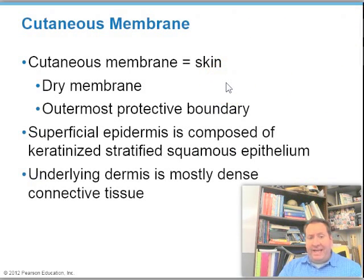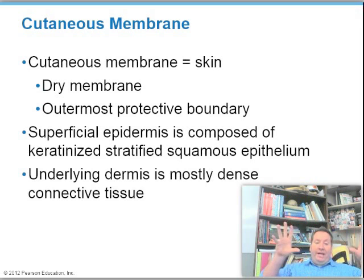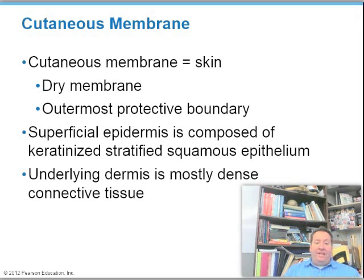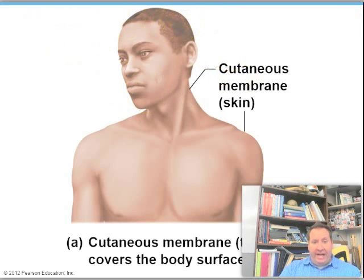The first type of membrane is your skin — it's a cutaneous membrane. It's a dry membrane and the outermost protective boundary of your body. The outside is composed of keratinized stratified squamous epithelial cells that secrete keratin, which acts as a waterproofing agent. Beneath that we have the dermis, which is mostly dense connective tissue. Leather is actually dermis. This cutaneous membrane is an epithelial membrane.